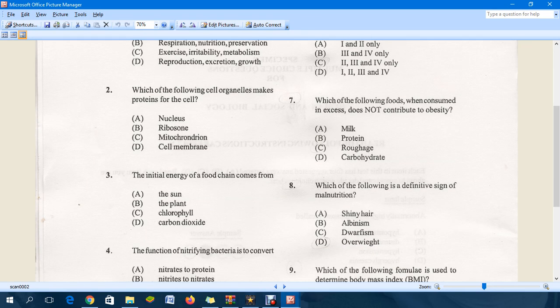Question three: The initial energy of a food chain comes from - the answer is A, the sunlight. Not the plant, not chlorophyll. Chlorophyll is actually the part of the plant leaf that will trap the energy that comes from the sunlight. Carbon dioxide is involved in the process where plants make their own food.